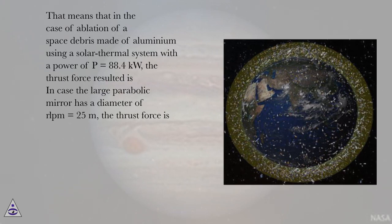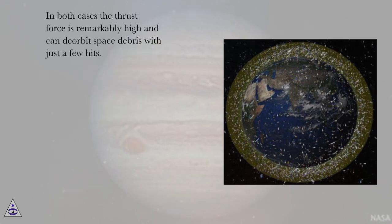In case the large parabolic mirror has a diameter of rLPM = 25 meters, the thrust force is [calculated]. In both cases, the thrust force is remarkably high and can deorbit space debris with just a few hits.